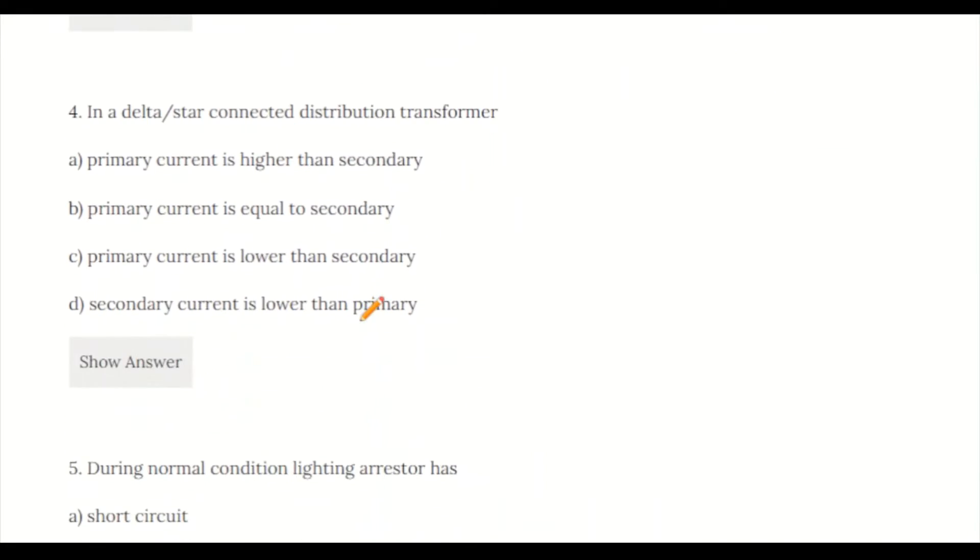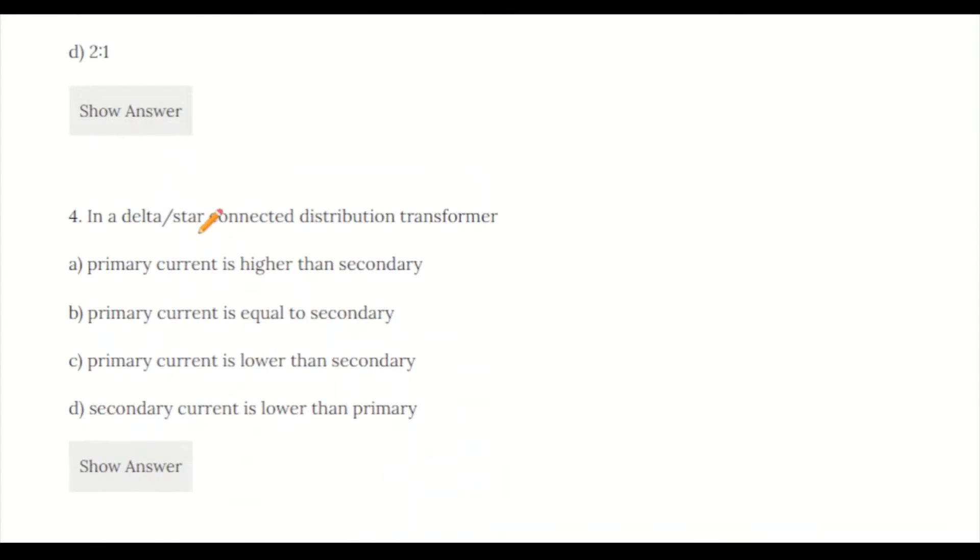Question 4: In a delta-star connected distribution transformer: a) primary current is higher than secondary, b) primary current is equal to secondary, c) primary current is lower than secondary, d) secondary current is lower than primary. In delta connection, the line voltage is greater on primary side by root 3 times compared to secondary. Since power remains same, primary current is lower than secondary. Option C is the correct answer.